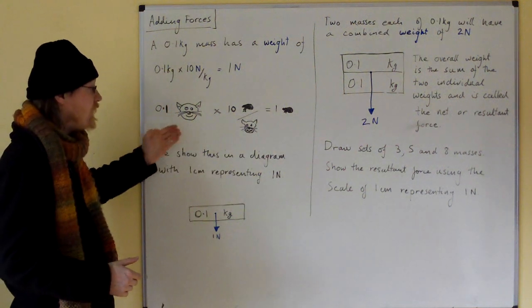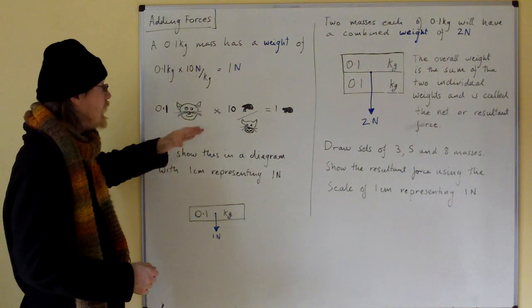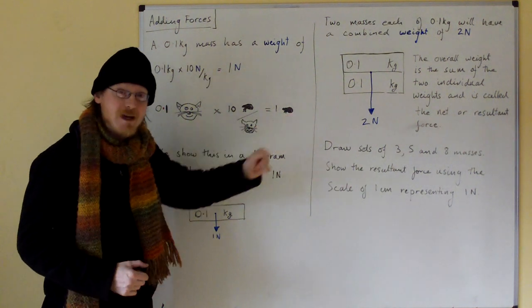If we had half a cat, 0.5, we'd have five fleas. If we had two cats, two cats with 10 fleas each, we'd have 20 fleas.